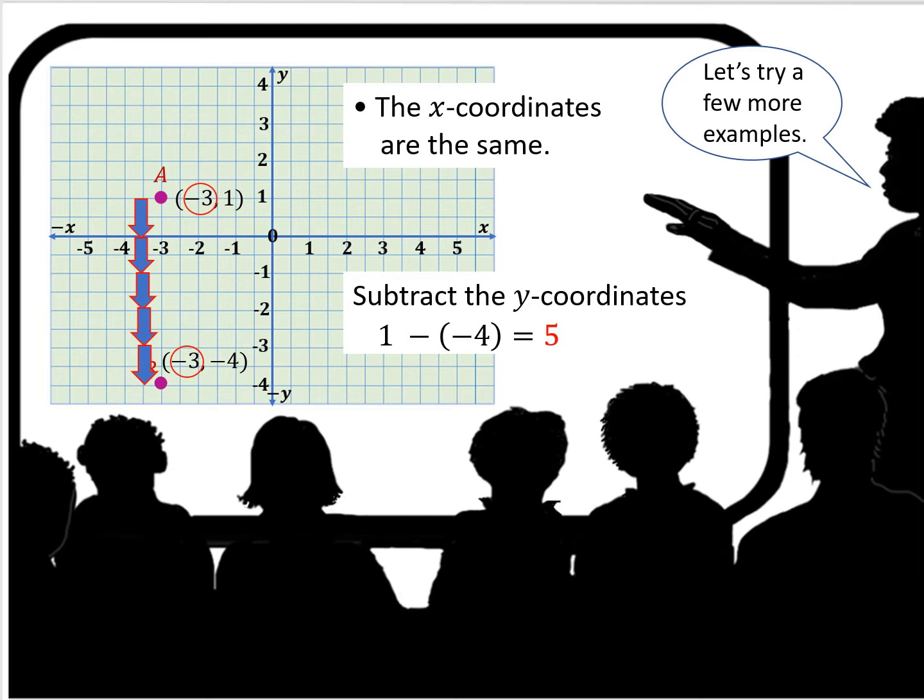You can check that by just counting on the graph itself. If you just look at the graph, going from 1 to 0 is 1. From 0 to negative 1 is 2. Negative 1 to negative 2 is 3. Negative 2 to negative 3 is 4. And then negative 3 to negative 4 is 5 units.